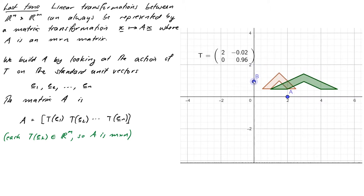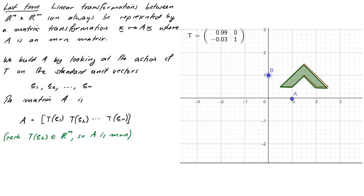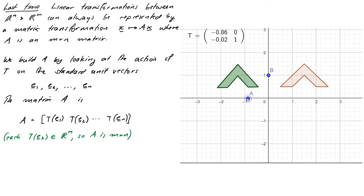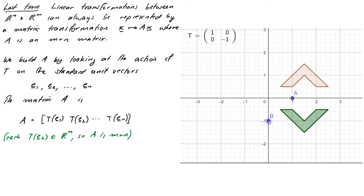Let me put them back for a second. If I move one of these over like this, it looks like I can reflect my object in this axis. I can do the similar thing with point B — I can reflect it in the horizontal axis. I can mess around with these in all sorts of different ways.